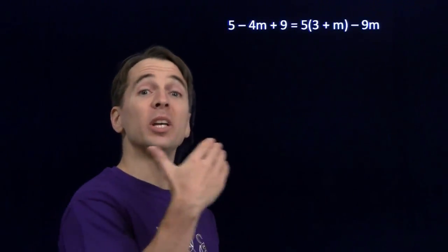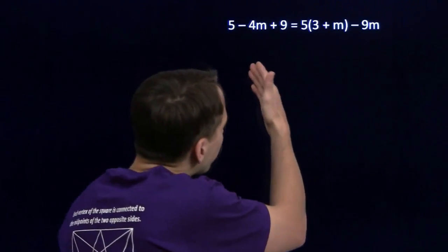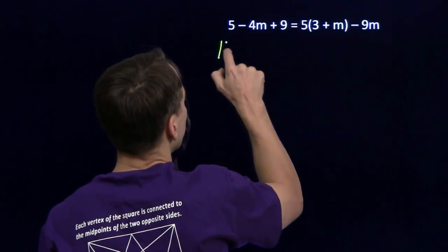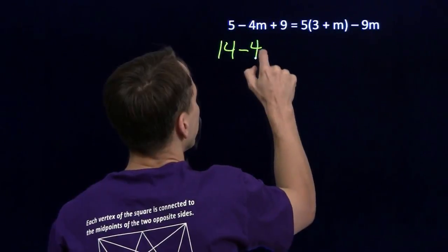Linear equation here. We know how to handle that. We isolate the variable. We'll start by simplifying both sides. Over here on the left, the 5 and the 9 give us 14, so we have 14 minus 4m.